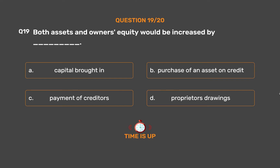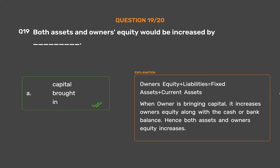The correct answer is option A: capital brought in. Owner's equity plus liabilities equals fixed assets plus current assets. When the owner brings in capital, it increases owner's equity along with the cash or bank balance. Hence both assets and owner's equity increase.